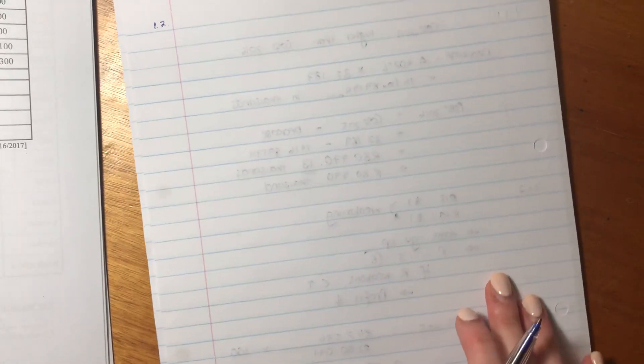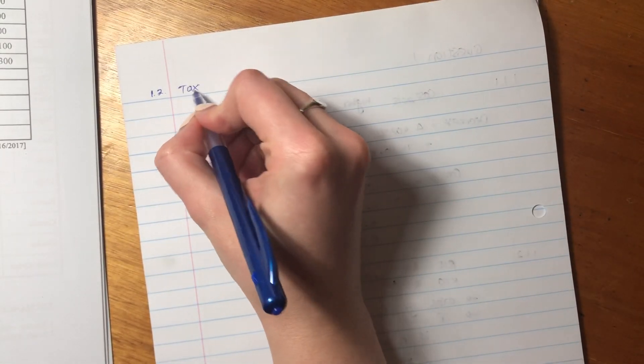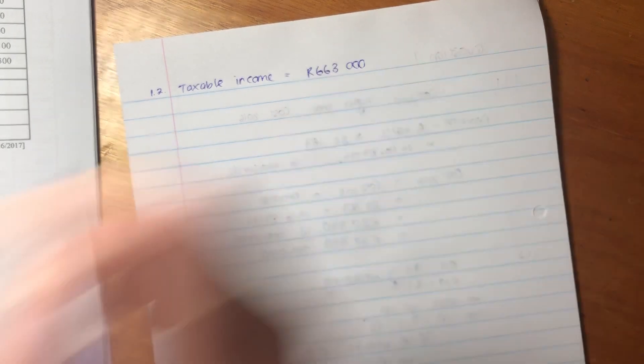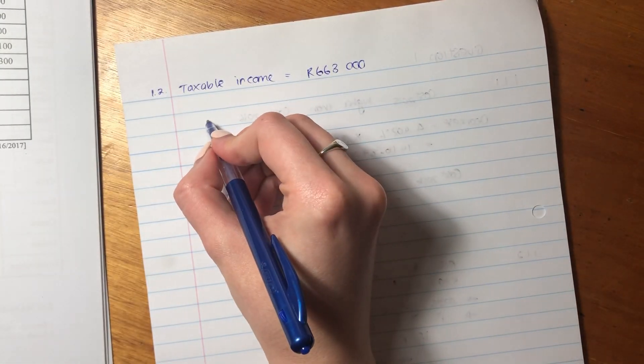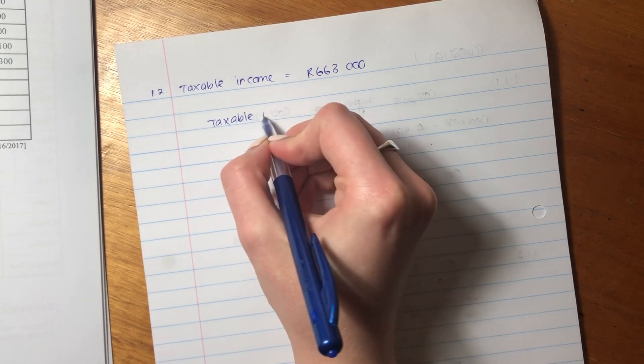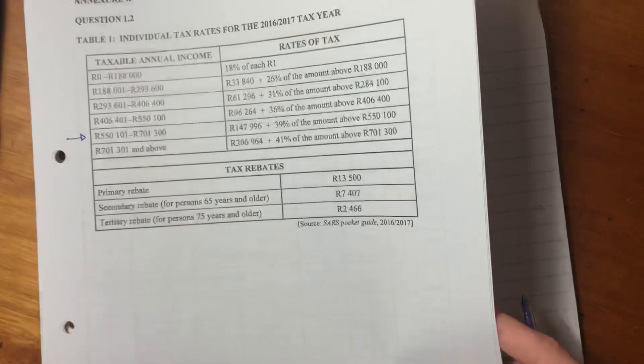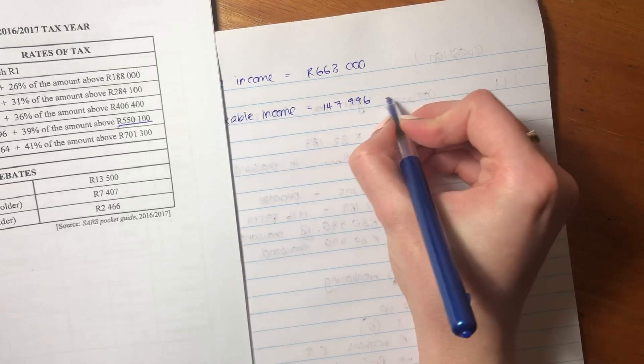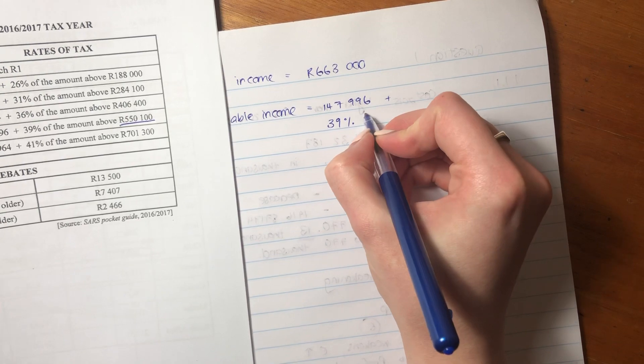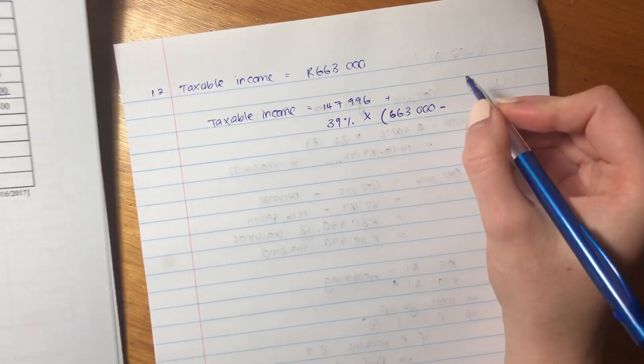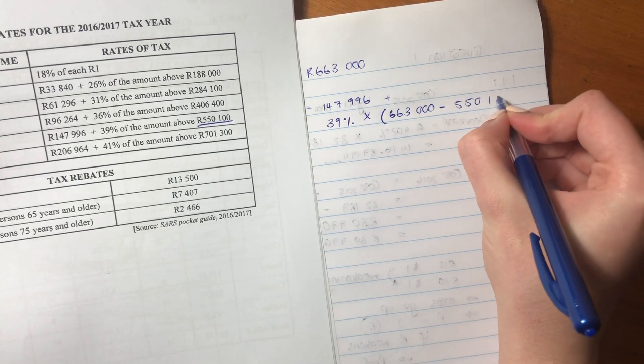So we're going to say his taxable income equals $663,000. Then we're going to say that his tax—his taxable income is interesting. So over here, it says this much plus 39% of the amount that is above that amount. So we say, okay, we know he's going to pay the $147,996 plus 39% times, and then put in brackets, the amount that he gets as his taxable income minus this amount—the $550,100.